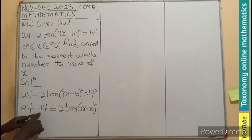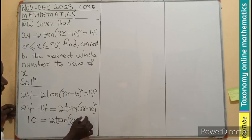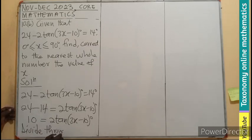So if we take away 4 from here and 1 from here, you get 10 equals 2 tan(3x minus 10). But you can see all these are multiplying, so we can divide through by 2.